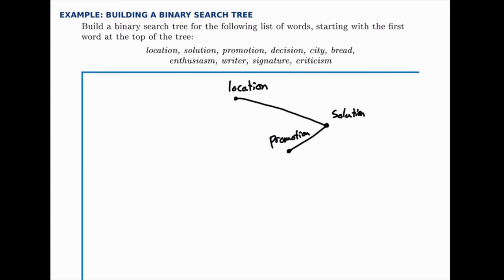Then for 'decision,' we start at the top of the tree — it comes before 'location' alphabetically, so we'll move to the left. Since there's nothing there yet, we'll insert a new node for 'decision' right there. 'City' comes before 'location,' so we'll move to the left. When we get to 'decision,' we'll move to the left again and insert a new node.